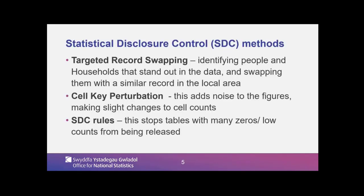So we had the SDC methods. Now, targeted record swapping — this is affecting the data that went into the system, identifying people and households and swapping them with a similar record in the local area. Cell key perturbation is adding slight noise to the figures and making slight changes to cell counts. We also built in some rules to the table which stop tables with many zeros and low counts in general terms being released.